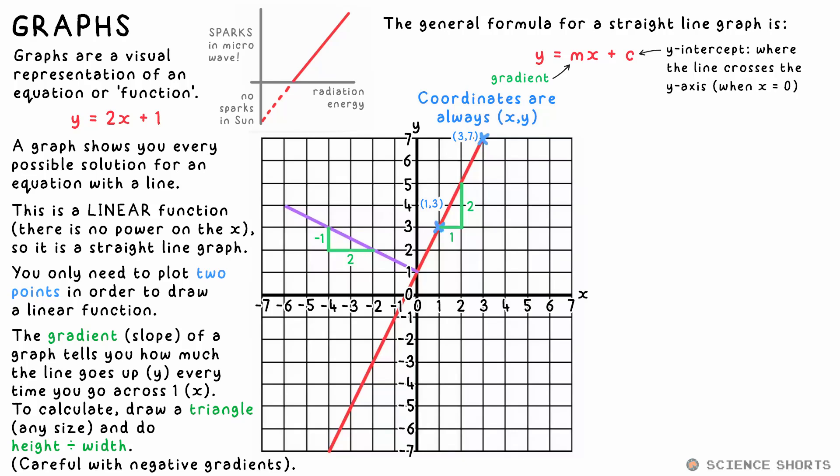C is the y intercept. It tells you where the line crosses the y axis. If this is zero, then the line passes through the origin zero, zero. Not so here though. We can see that it crosses it at a y value of one.